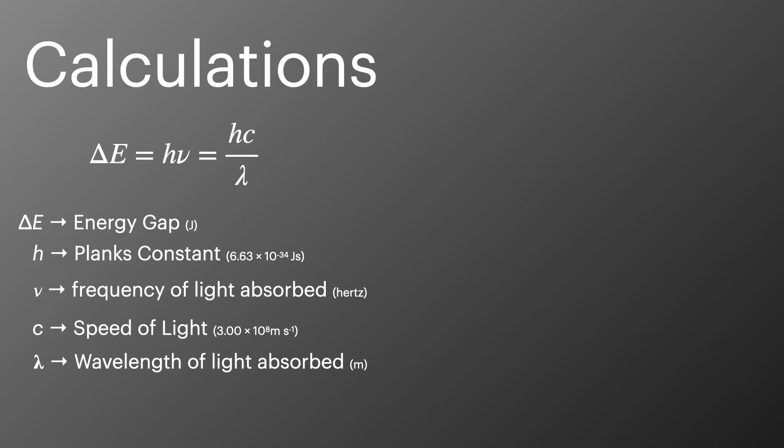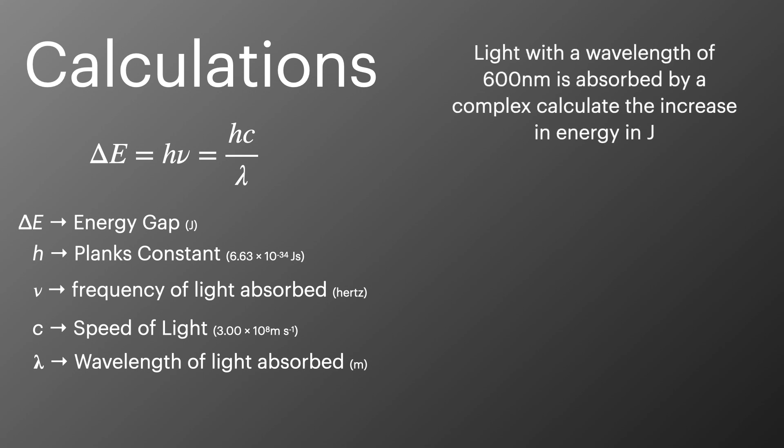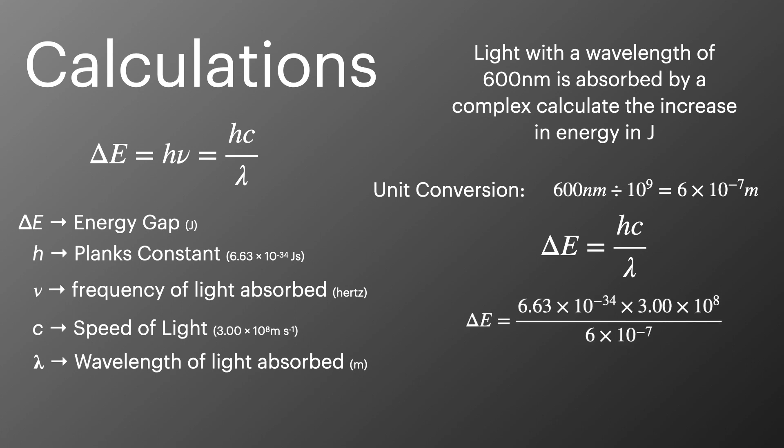We'll have a look at performing a calculation with this equation. Light with a wavelength of 600 nanometers is absorbed by a complex. Calculate the increase in energy in joules. Firstly, we'll convert the 600 nanometers into meters to use in our equation. We'll then write out the simple part of the equation that we want to use. Then we'll substitute in the values for Planck's constant and the speed of light, and divide those over our converted wavelength. And then we'll calculate our energy change to be 3.32 times 10 to the minus 19 joules.